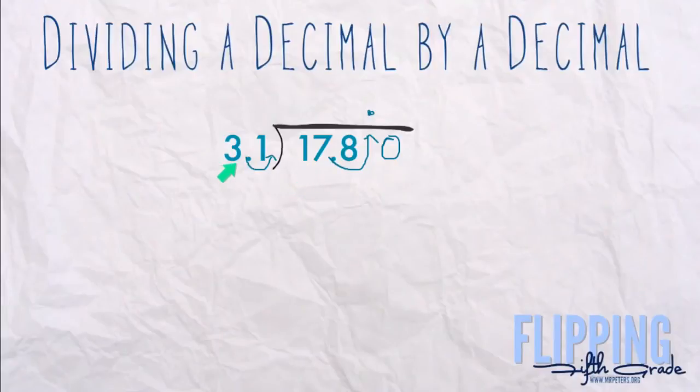So we ask ourselves how many times does 30 go into 180? We know that the zeros can cancel out and that's going to give us 6 times. So we're going to put our 6 above.